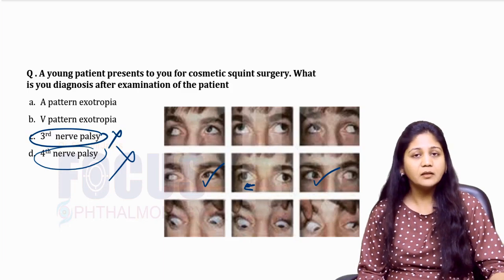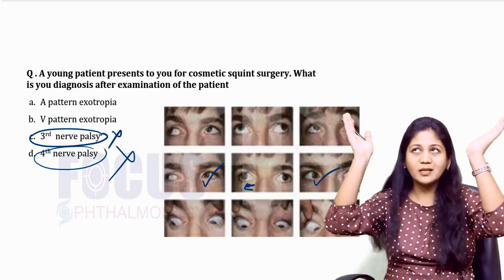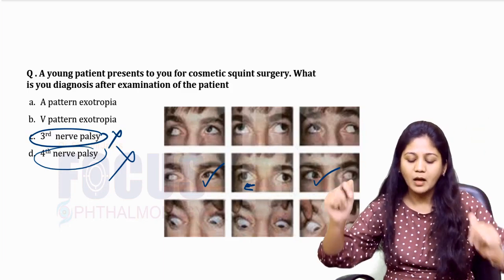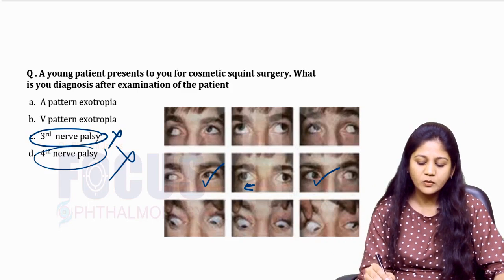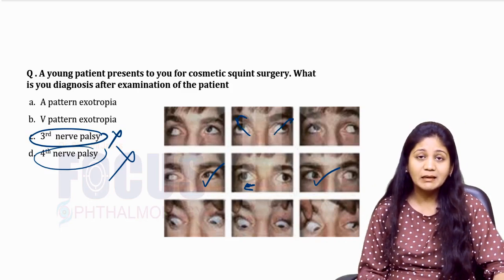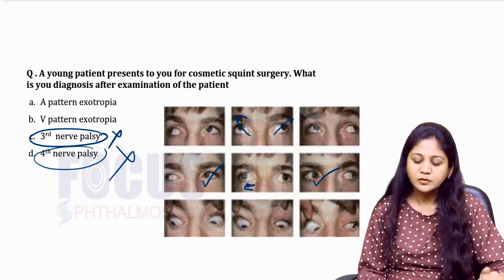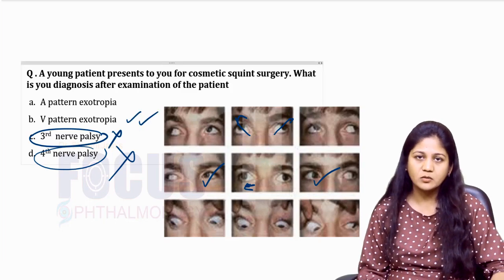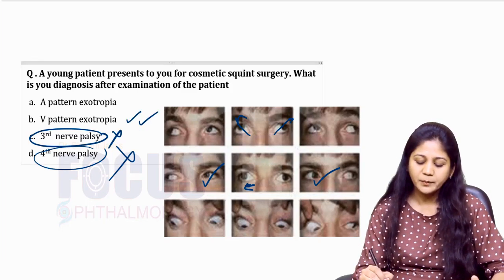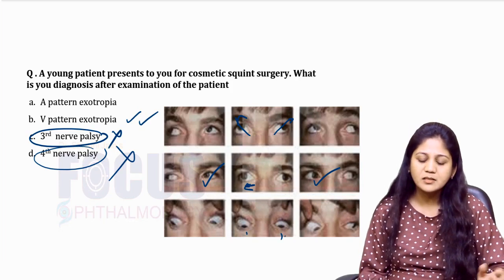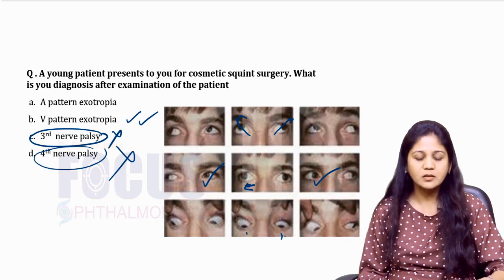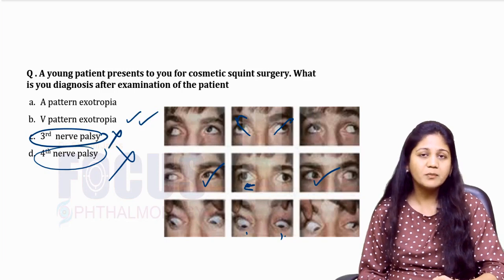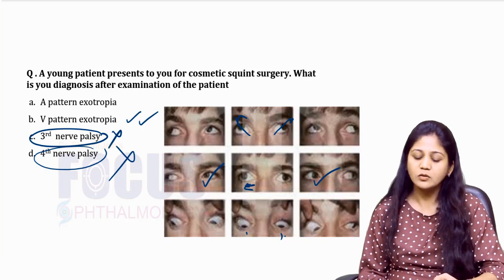We are left with A pattern or V pattern exotropia. V pattern means exotropia increases when the patient looks up. The moment the patient looks up, exotropia is increasing. When the patient looks down, exotropia decreases. So this is typically a picture of V pattern exotropia.